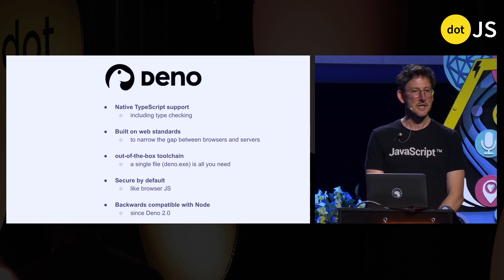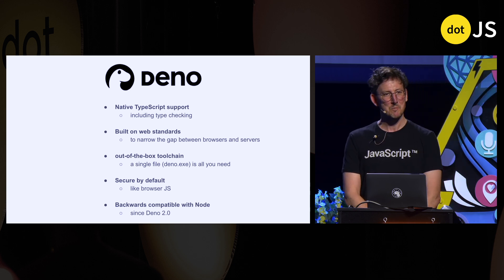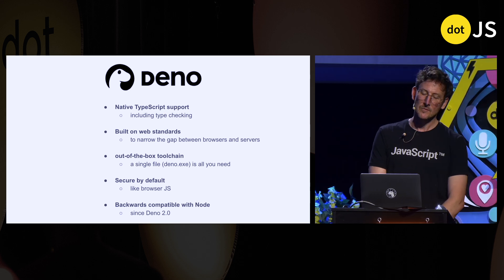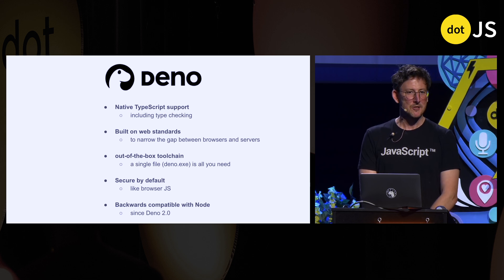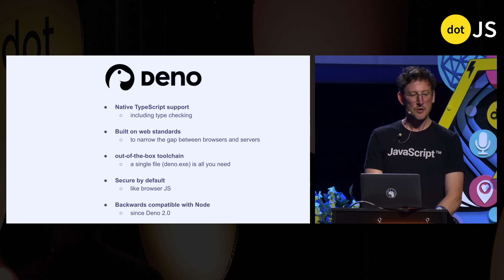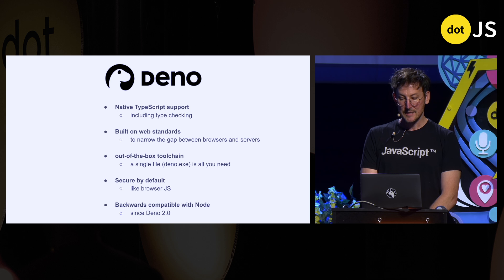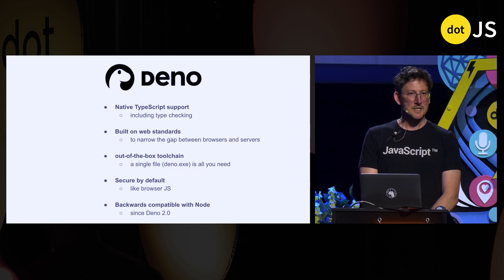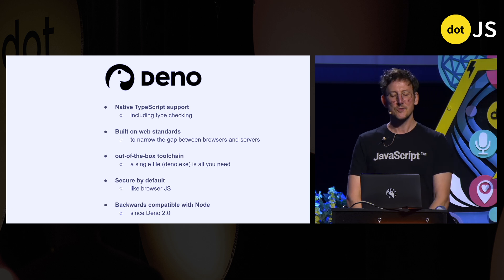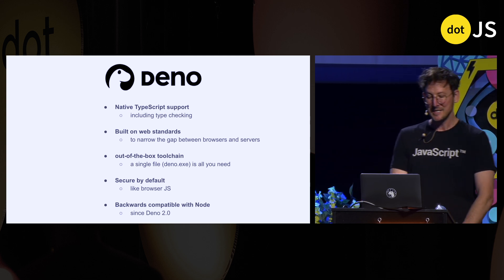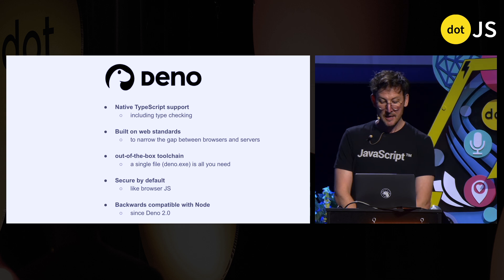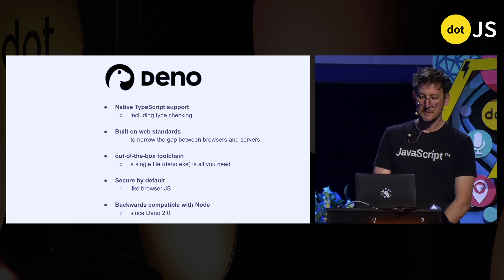For those of you who don't know, Dino is a JavaScript and TypeScript runtime. It has TypeScript deeply baked into it and can do more than just execute TypeScript — it can do type checking. It is really thoughtful about web standards and is of course a server-side runtime, but tries to narrow the gap between browsers and server JavaScript. It is an out-of-the-box tool chain — everything you need comes in a single file — with all sorts of tooling for manipulating and understanding JavaScript and TypeScript. It is secure by default; like browser JavaScript, you don't get access to the file system or the network by default. And it is backwards compatible with Node since Dino 2.0.